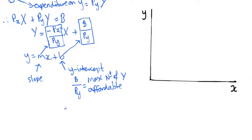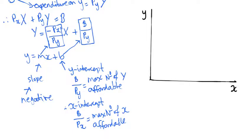Logically then, the x-intercept must resemble the same form uppercase B over Px. And this is the maximum number of X possible units from a given B dollars. Note, in terms of the slope, it is negative. So our line is going to be negative.